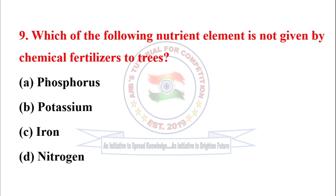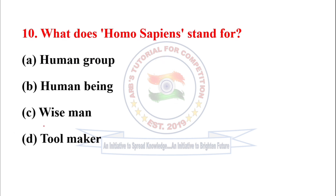Question number 9: Which of the following nutrient elements is not given by chemical fertilizers to trees? The correct option is option C, iron. Next question: What does Homo sapiens stand for? Homo sapiens stands for wise man, so the correct option is option C.